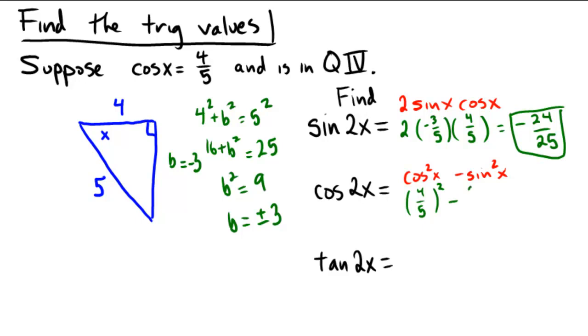Minus the sine, which is negative 3 fifths, being squared. So we'd have 16 over 25 minus 9 over 25. And so it looks like we get a final answer for this one of 7 over 25.